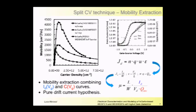Let me now show the other topic we're currently working on. The split-CV technique is a technique for mobility extraction. You can find the mobility of the carrier as a function of carrier density in the channel. To perform this technique, you need to know the IV and CV characteristics of the devices, combining them together under the hypothesis of pure drift current in the channel.